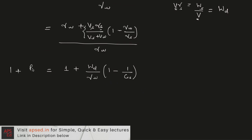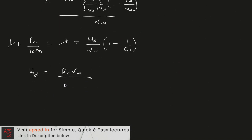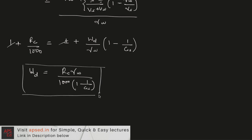On one side we have 1 + RC/1000 as the hydrometer reading. After cancellation, we find: W_d = RC × γ_w / (1000 × (1 − 1/G_s)). That way we can find the weight of solid per cc at a given effective depth H_e.